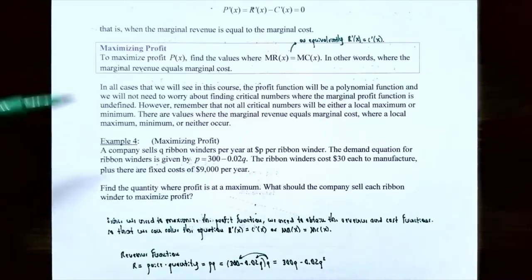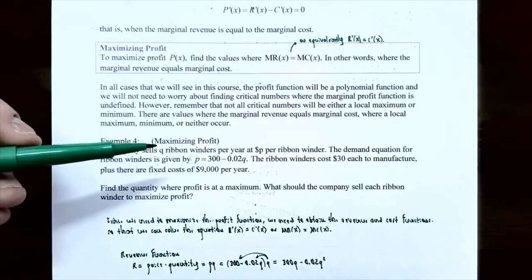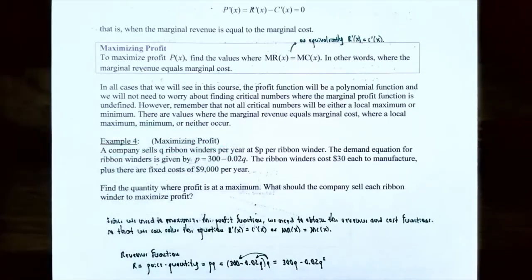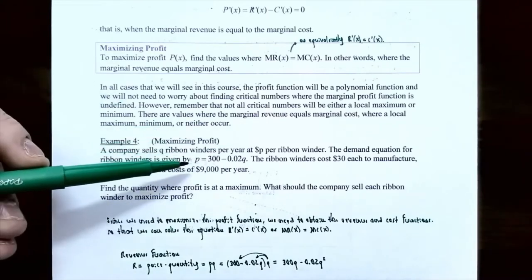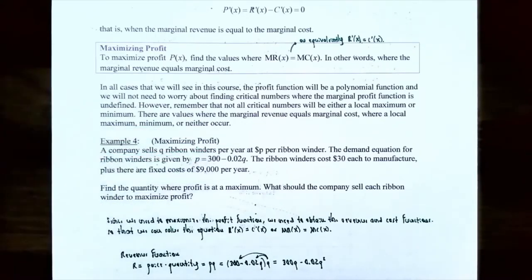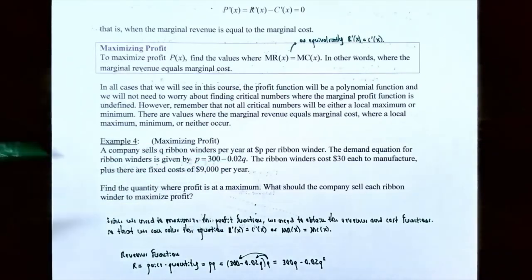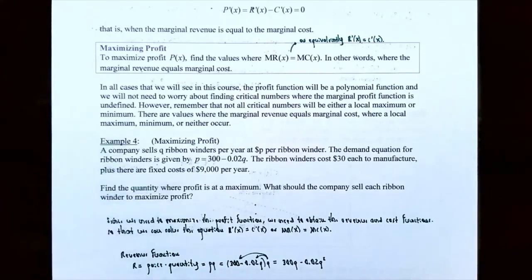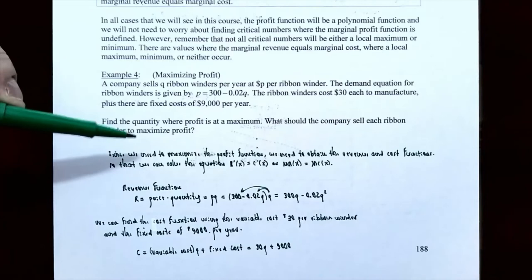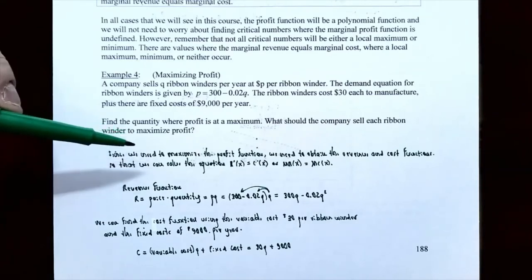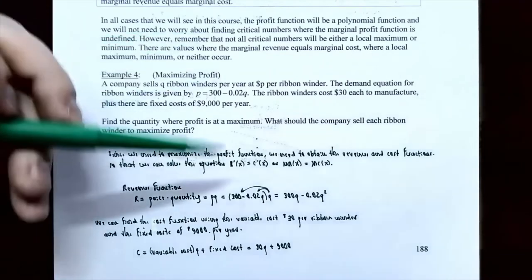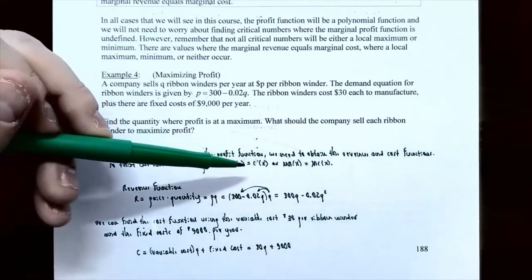Let's look at Example four: maximizing profit. A company sells q ribbon winders per year at p dollars each. The demand equation for ribbon winders is given by p = 300 − 0.02q. So this time we don't have to worry about finding the price-demand equation — it's already given. The ribbon winders cost $30 each to manufacture, plus there are fixed costs of $9,000 per year. Find the quantity where the profit is at a maximum, and what price should the company sell each ribbon winder to maximize profit.